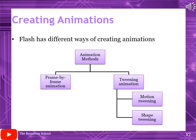Flash has different ways of creating animation. The animation methods are: frame-by-frame animation, and tweening animation, which includes motion tweening and shape tweening. Today we will only discuss frame-by-frame animation, and in the next lecture we will discuss tweening animation.